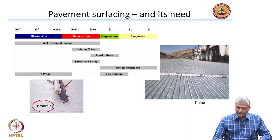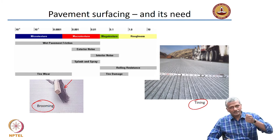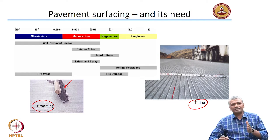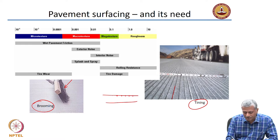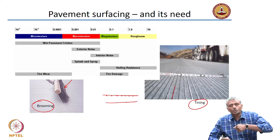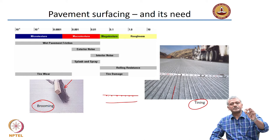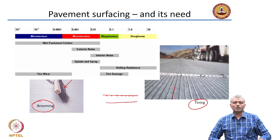Another technique is called tining. Tining is done after the concrete surface has become hard — we take a grooving tool and cut a small groove on top. It is not a deep cut but just a small groove provided on top. If this is your pavement, a very small groove is provided at small distances. This is not a crack, this is not a joint, but just a grooving done on the pavement surface — a groove of maybe about less than 5 millimeters actually created in the concrete surface.